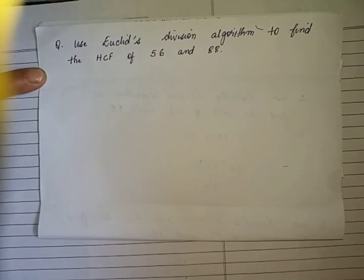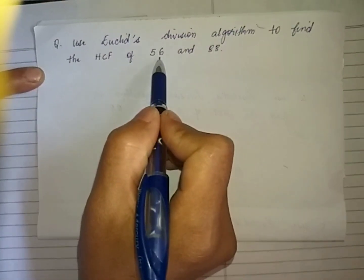In this video I'll show you how to find out the HCF of two numbers using Euclid's division algorithm. For example, let us take two numbers 56 and 88.